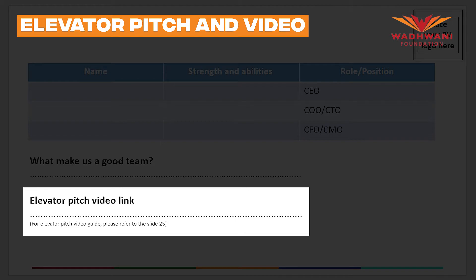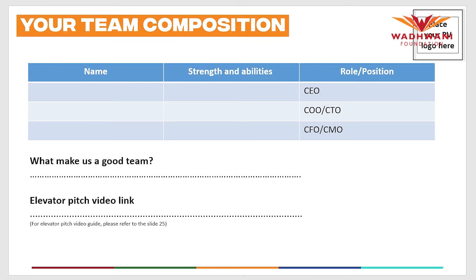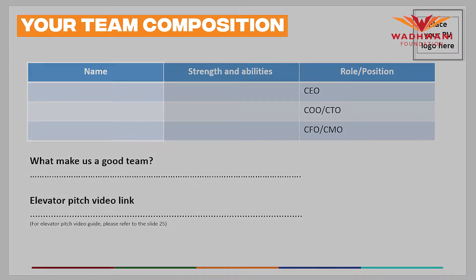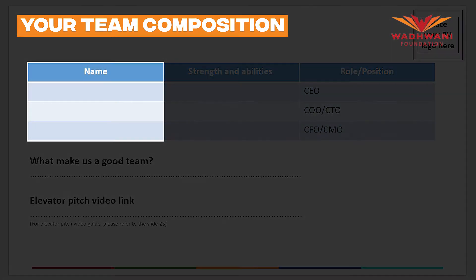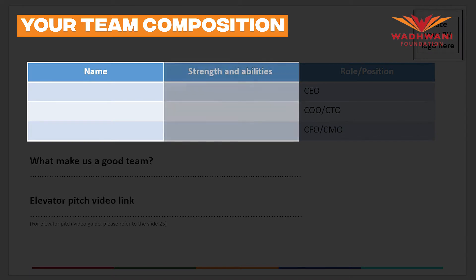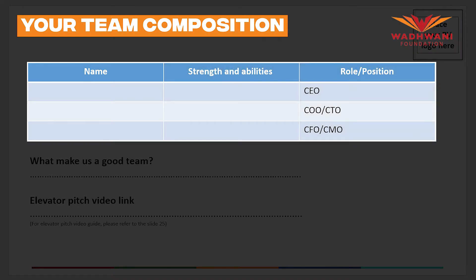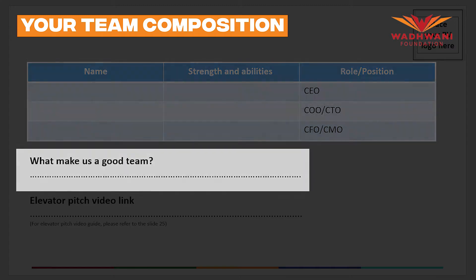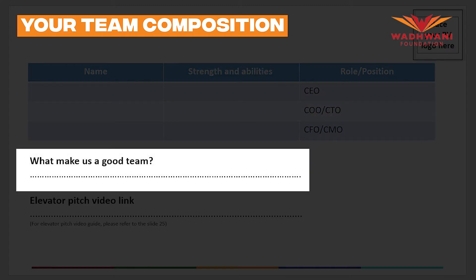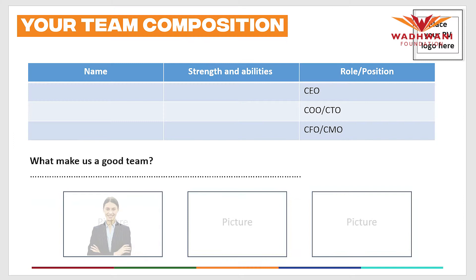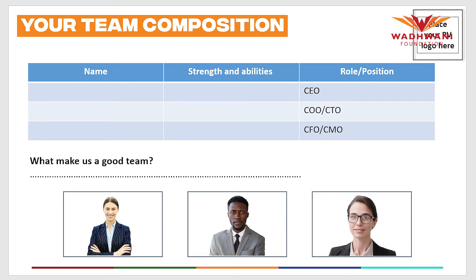Use the team composition slide to enter the details of your team members, their strengths, abilities, and the roles assigned to them. Talk about what makes you a good team to solve the problem you have chosen. Add professional images of all your team members, and you are done with the presentation for Milestone 3.